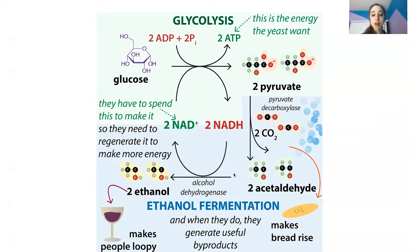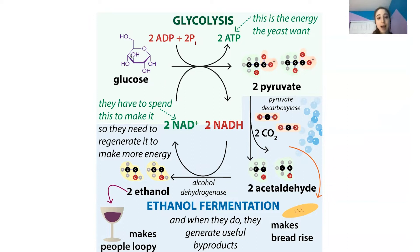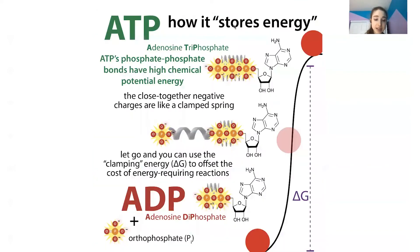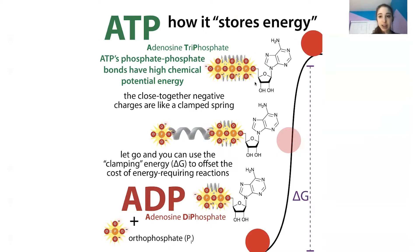The ethanol is a byproduct produced when yeast regenerate NAD+. Yeast aren't trying to make gas or ethanol — they're trying to make ATP. ATP is the form of energy storage in cells. It has three negatively charged phosphate groups — phosphorus surrounded by oxygen — and it's like a clamped spring: negative charges repel each other, so it takes energy to hold them together. These are called high-energy bonds with high chemical potential energy.